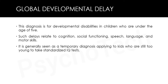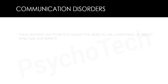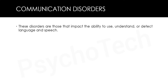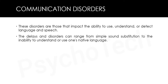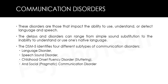Once children reach the age where they are able to take a standardized intelligence test, they may be diagnosed with an intellectual disability. Communication disorders are those that impact the ability to use, understand or detect language in speech. The DSM-5 identifies four subtypes: language disorders, speech sound disorder, childhood onset fluency disorder (stuttering), and social/pragmatic communication disorder.